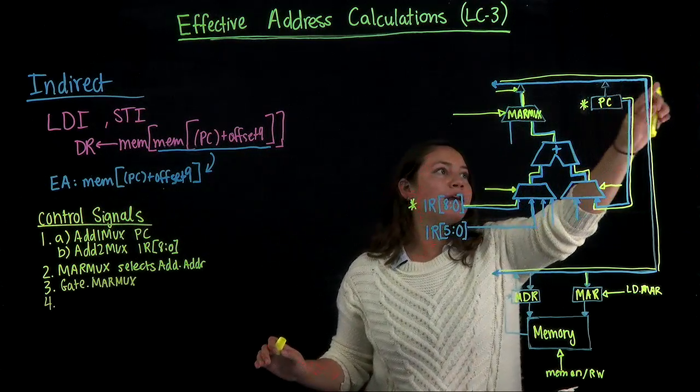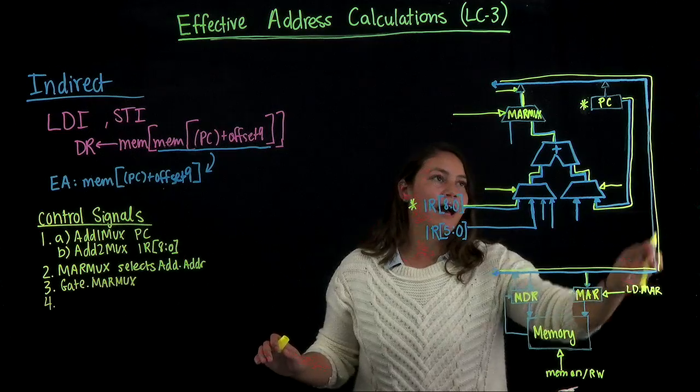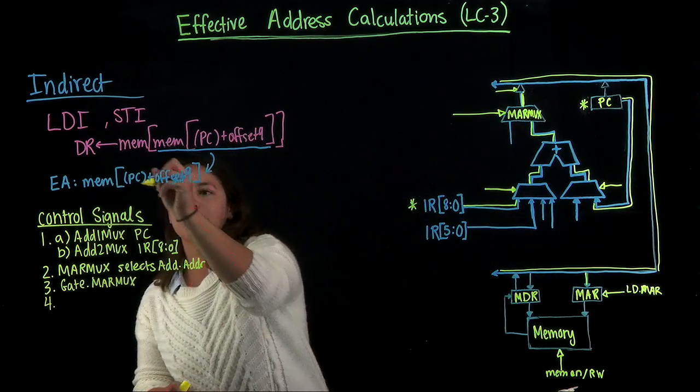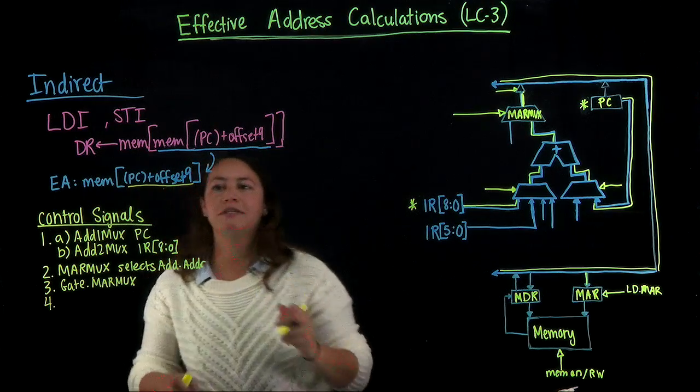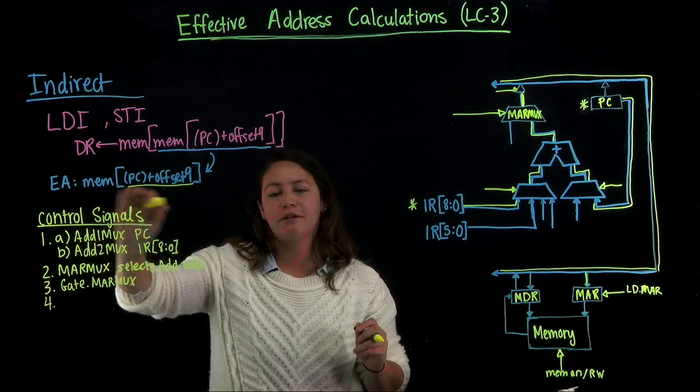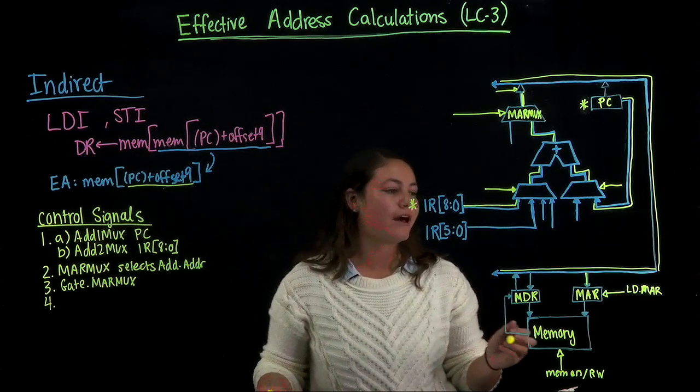Once we open the gate, then the data that we have is on the bus. So far we've just done this part right here, PC plus offset 9. We need to read that value from memory in order to calculate the full effective address.